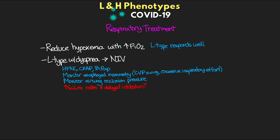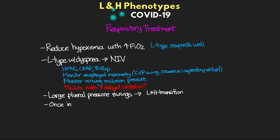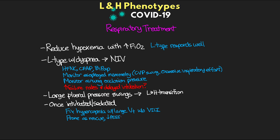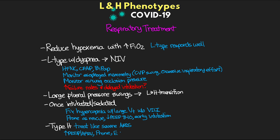They note that non-invasive ventilation may be associated with high failure rates and delayed intubations — something to consider. Importantly, it's these large pleural pressure swings that may lead to transition from L-type to H-type by increasing risk of injury to lung tissue. Once intubated and sedated, they say hypercapnia in L-type patients can be resolved using larger tidal volumes without the risk of ventilator-induced lung injury. They recommend prone as a rescue maneuver, dropping PEEP to 8–10 cmH₂O due to risk of hemodynamic failure, and utilizing early intubation to potentially prevent the transition to H-type.